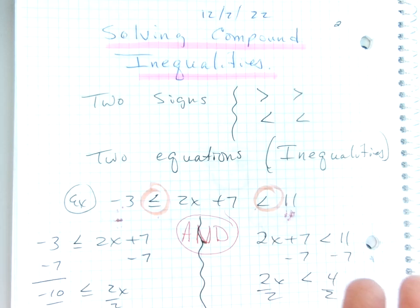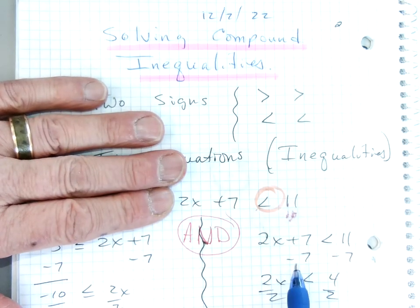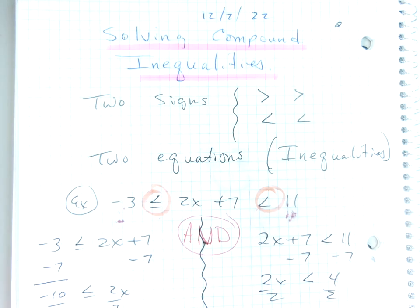So then I went over and I solved the other side, on the right hand side, the second equation. And I went minus 7 minus 7, I got 4. Divide by 2, divide by 2, and I got x is less than 2.